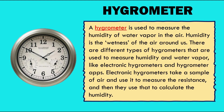What is a hygrometer? A hygrometer is used to measure the humidity or water vapor in the air. Humidity is the wetness of the air around us. There are different types of hygrometers, like electronic hygrometers. Electronic hygrometers take a sample of air and use it to measure the resistance, and then use that to calculate the humidity.